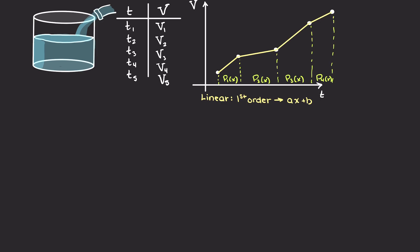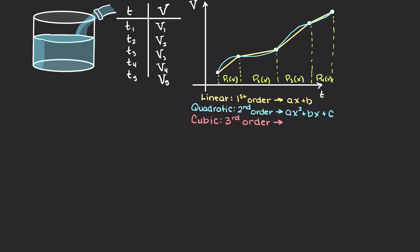Secondly, a quadratic spline fits a second order polynomial to our interpolation function, and this adds curvature to our interpolating function, but we only have one degree of freedom which forces us to use parabolas and parabolas alone. Now we will talk about the most common type of spline interpolation, that being cubic spline interpolation.